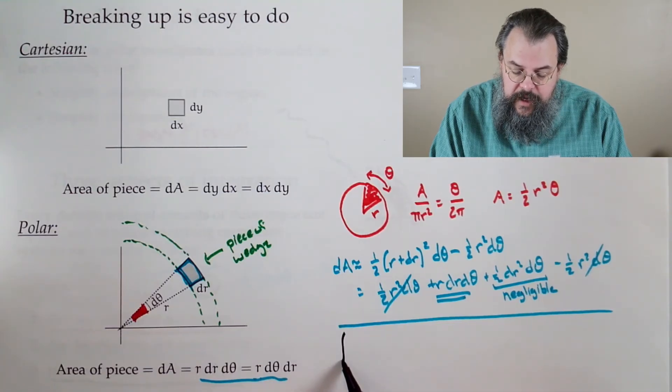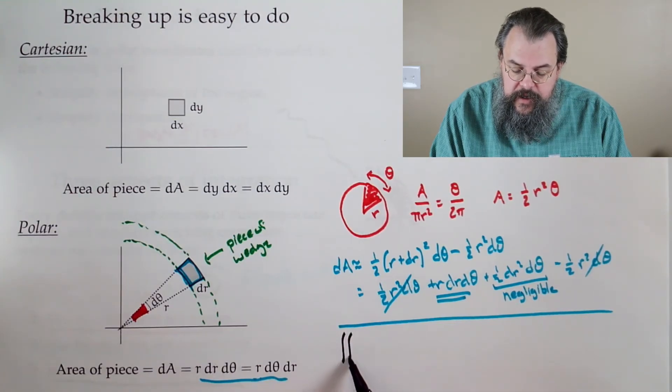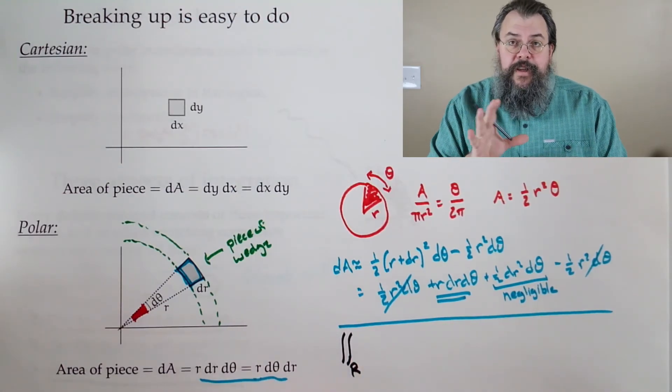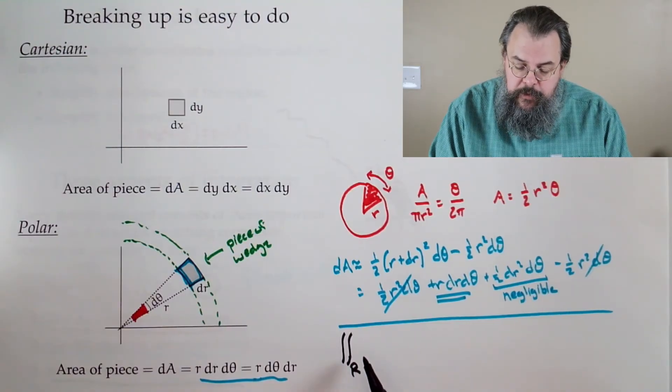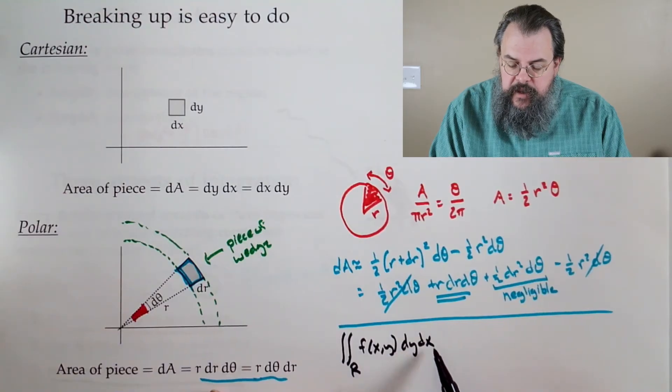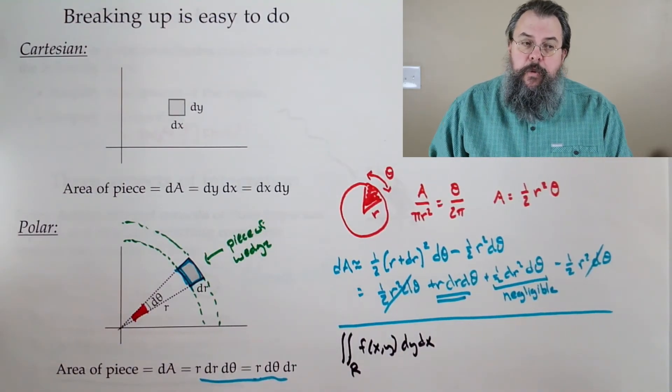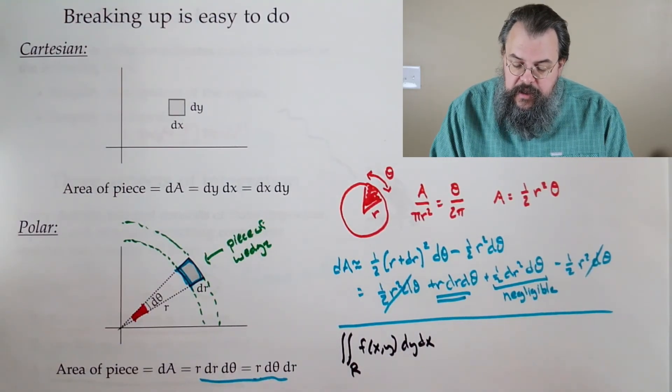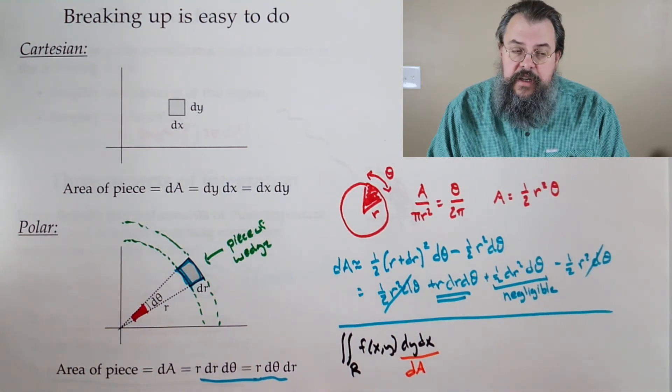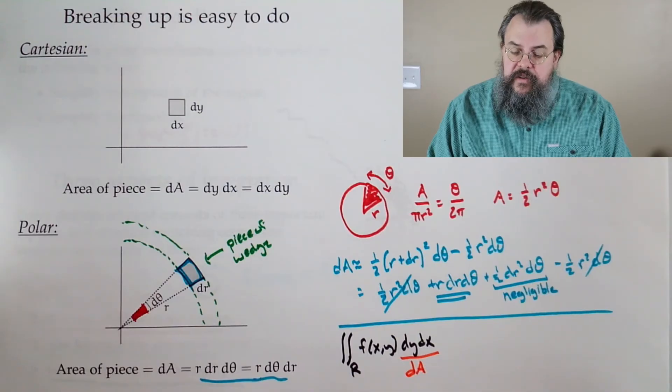Well, okay, so we have some integral going on here. I'll say region r. Well, the bounds are something, right? And that's the subtle part. F of xy. Maybe we have dy dx. And the key here is, well, what is dy dx? Look, this is really dA. It's how you're breaking your integral into parts.